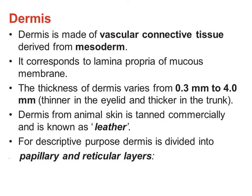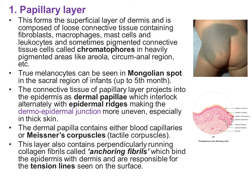Now we come to the dermis. It is vascular connective tissue derived from mesoderm, and corresponds to the lamina propria of the mucous membrane. The thickness of the dermis varies from 0.3 mm to 4 mm — it is thin in the eyelids and thick in the trunk. The dermis of different animals is tanned commercially and is known as leather. For descriptive purposes, the dermis is divided into the papillary layer and the reticular layer.